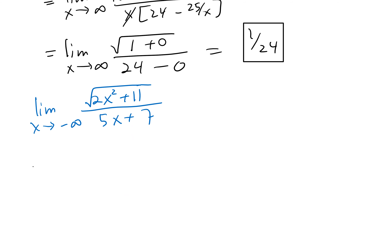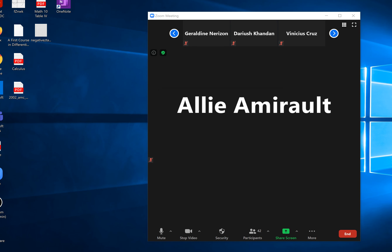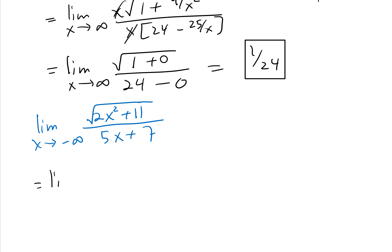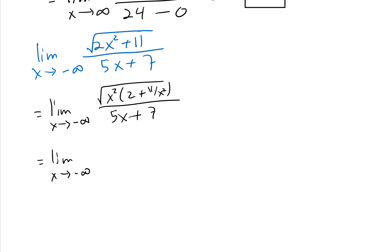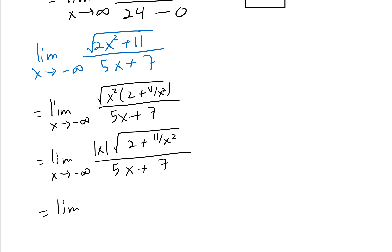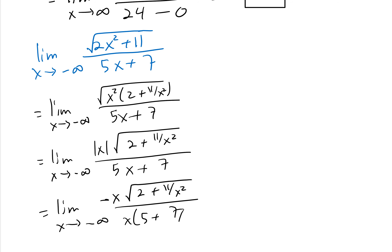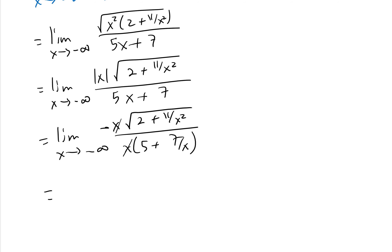Now try: limit as x approaches negative infinity. We factor x squared inside the radical, leaving (2 plus 11/x squared), then take x outside as absolute value of x, which equals negative x for negative infinity. Factor x from the denominator, giving (5 plus 7/x). The x's cancel, leaving negative square root of 2 on the top over 5.